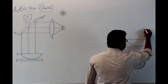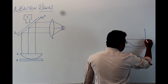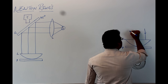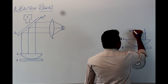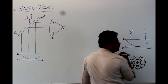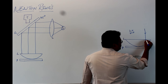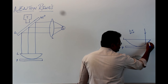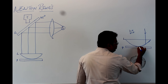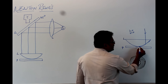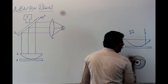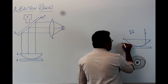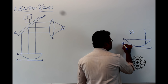Whenever light is incident on this arrangement, since it is incident normally, the angle of incidence i is 0, and automatically the angle of refraction is also 0. There is a formation of a thin film between the bottom of the plano-convex lens and the top of the glass plate.